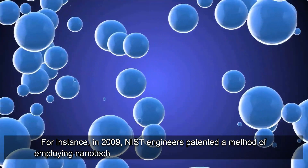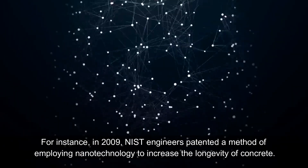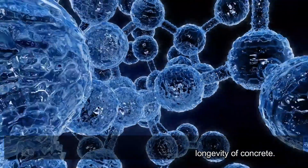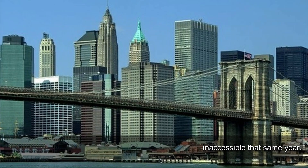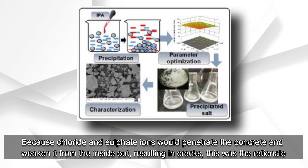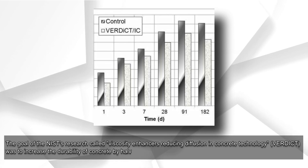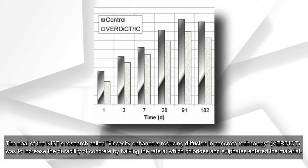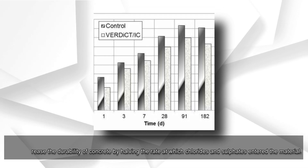In 2009, NIST engineers patented a method of employing nanotechnology to increase the longevity of concrete. One-fourth of America's bridges were deemed unsafe or inaccessible that same year, because chloride and sulfate ions would penetrate the concrete and weaken it from the inside out, resulting in cracks. The goal of the NIST's research — called Viscosity Enhancers Reducing Diffusion In Concrete Technology (VERDICT) — was to increase the durability of concrete by reducing the rate at which chlorides and sulfates enter the material.